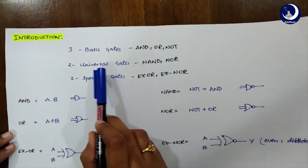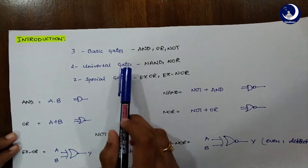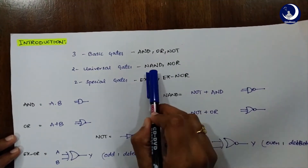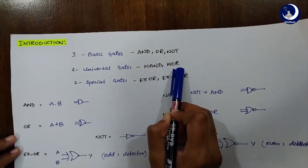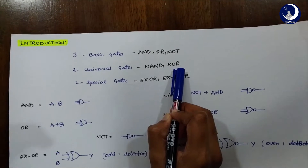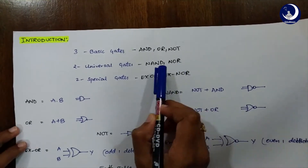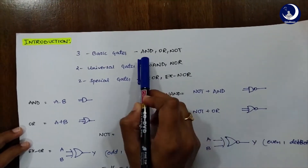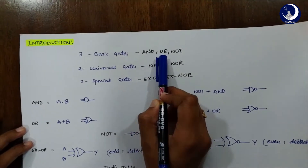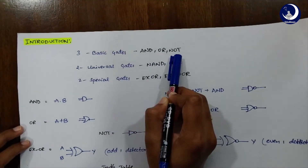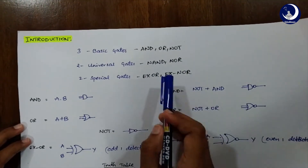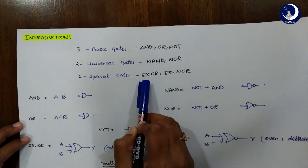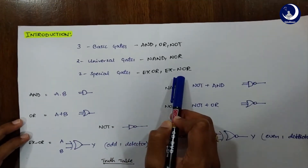Now what are universal gates? With the help of universal gates — with the help of these 2 gates — we can form or implement any other gates. Like using NAND and NOR, we can implement AND gate, OR gate, or NOT gate. Now with the help of NAND and NOR also, we can be implementing XOR gates and XNOR gates.